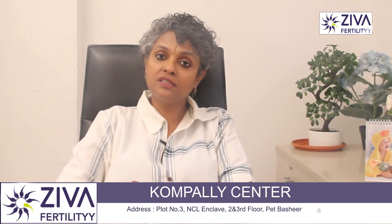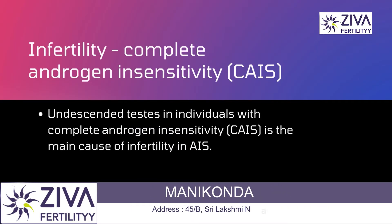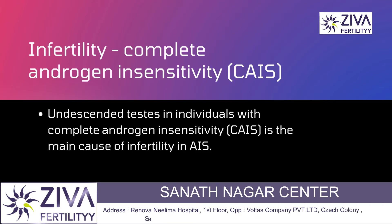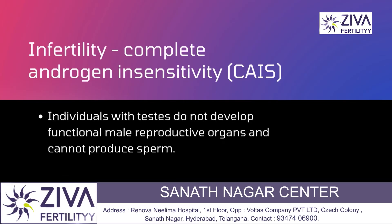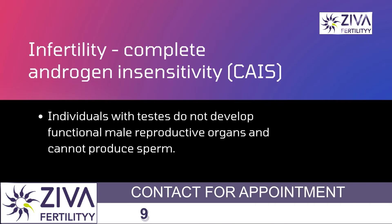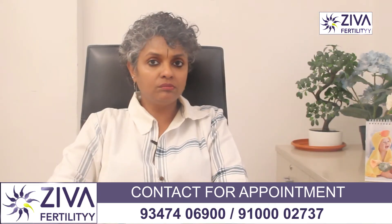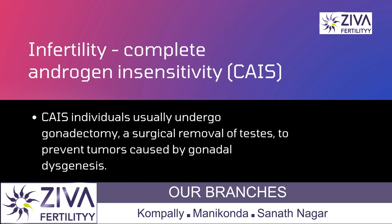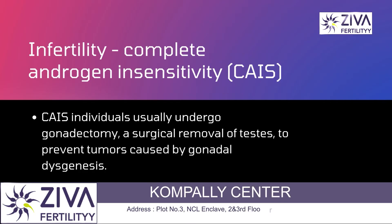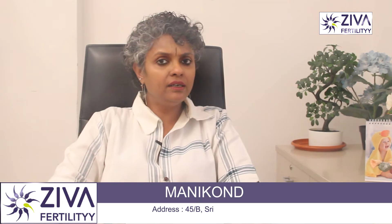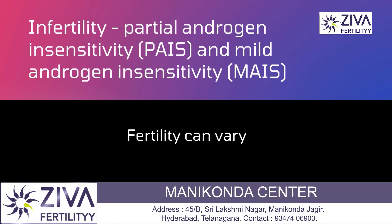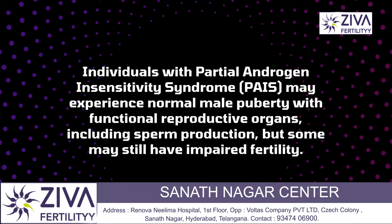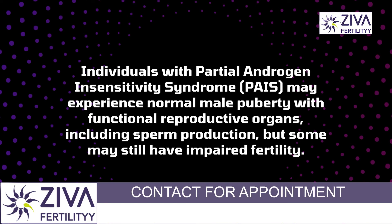Infertility in androgen insensitivity syndrome is primarily related to the presence of undescended testes in individuals with complete androgen insensitivity. Despite the presence of testes, these individuals do not develop functional male reproductive organs and are unable to produce sperm. The testes in complete AIS individuals are often removed surgically, called gonadectomy, due to the risk of developing tumours. In partial and mild androgen insensitivity syndrome, fertility can vary. Some individuals with partial syndrome may have sufficient androgen responsiveness to undergo normal male puberty and develop functional reproductive organs, including sperm production.